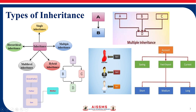For hierarchical inheritance, we have an account which can be of savings, fixed deposit, or current type. If we consider fixed deposit, then we can have short-term, medium-term, or long-term. This illustrates hierarchical inheritance.